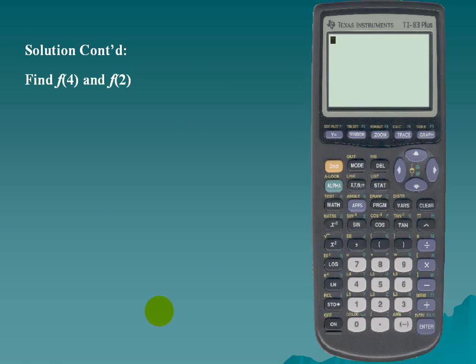The solution continued. In order to find f(4), we would take our equation and substitute x with 4. So f(4) is equal to 325.